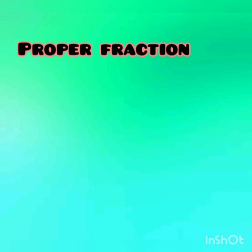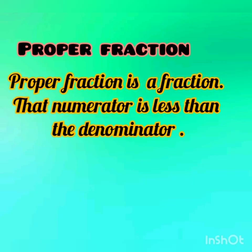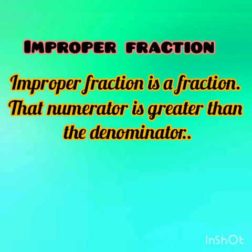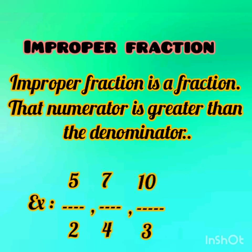Next, proper fraction. A proper fraction is a fraction where the numerator is less than the denominator. For example: 2 by 7, 3 by 8, 4 by 11. Observe these fractions — the numerators are less than the denominators. Next, improper fraction. An improper fraction is a fraction where the numerator is greater than the denominator. For example: 5 by 2, 7 by 4, 10 by 3. Here, the numerators are greater than the denominators.